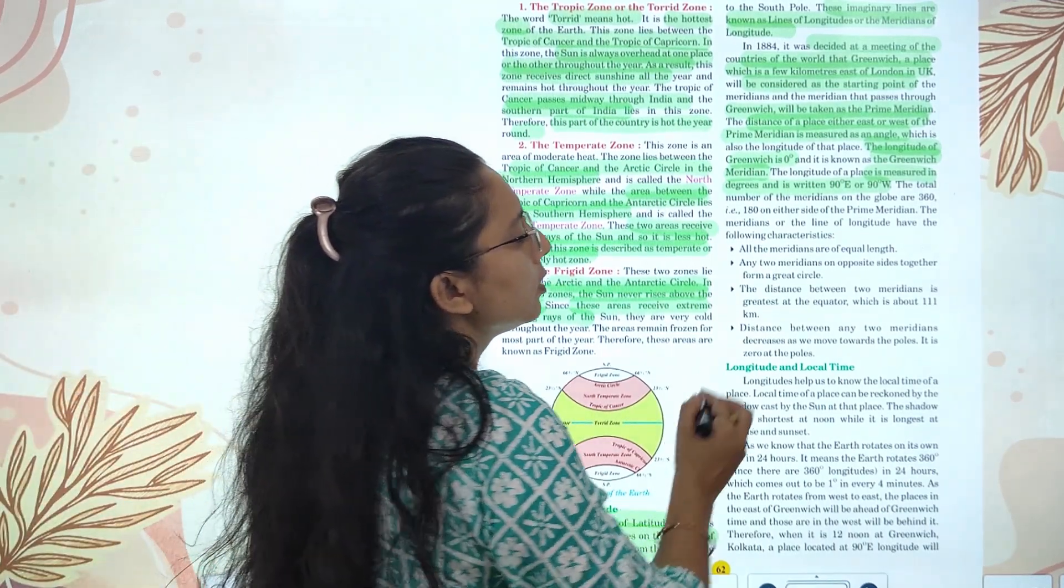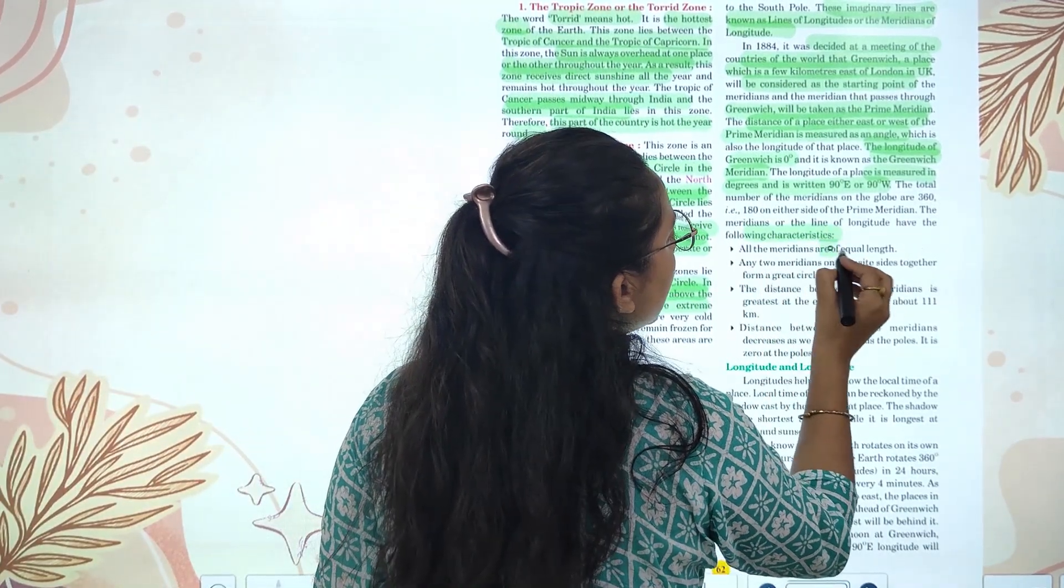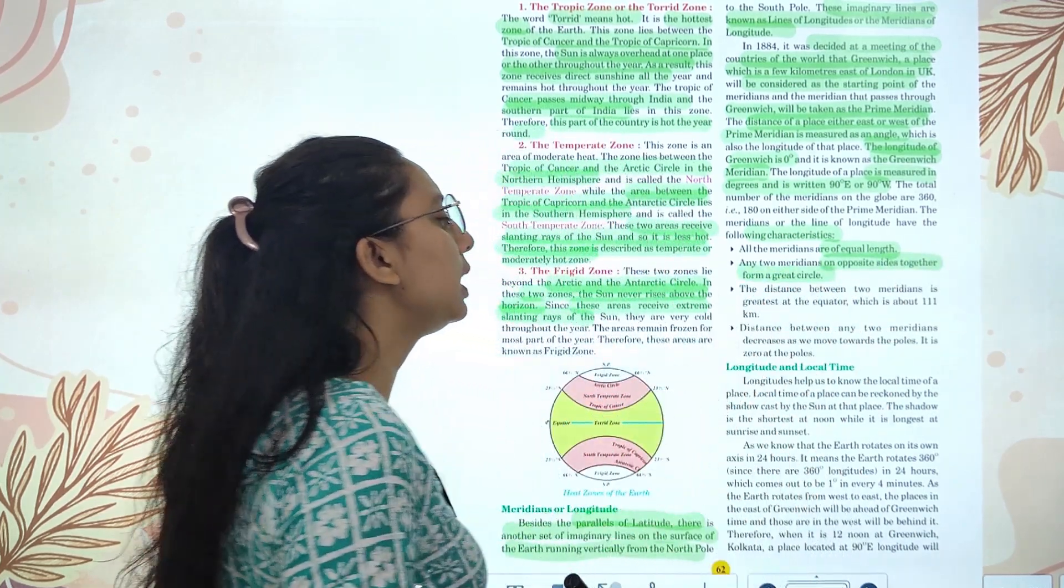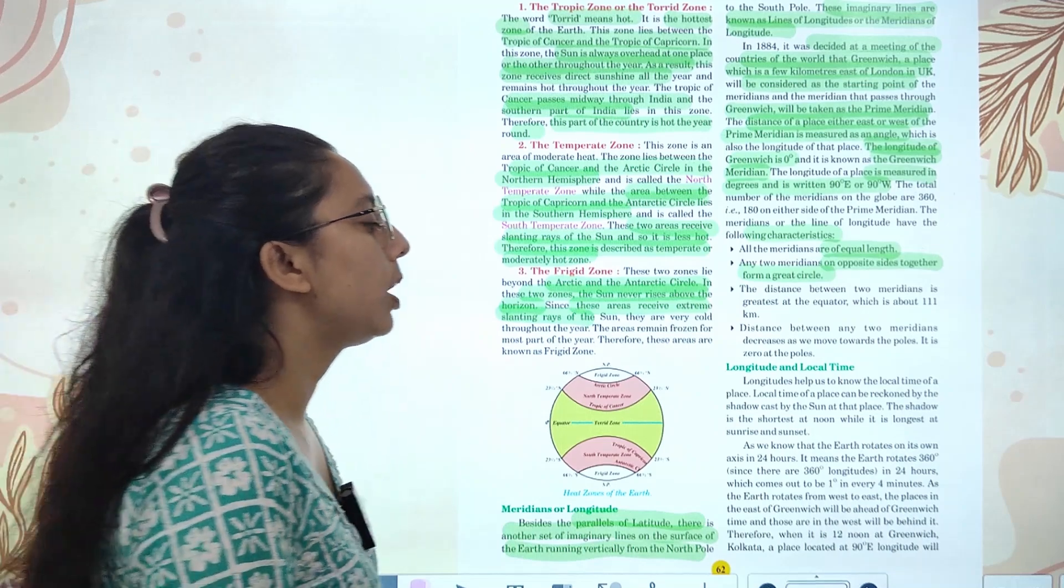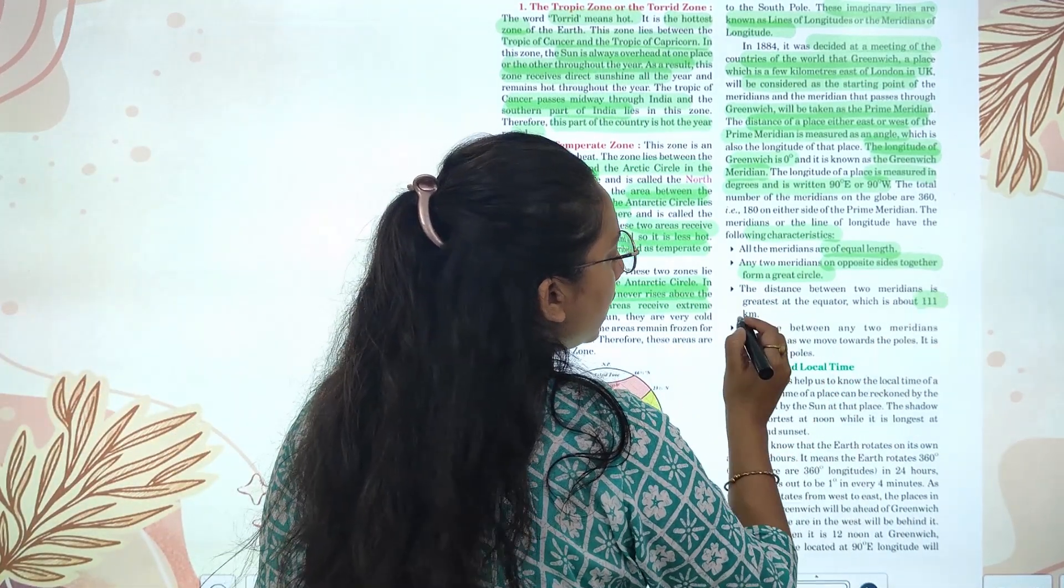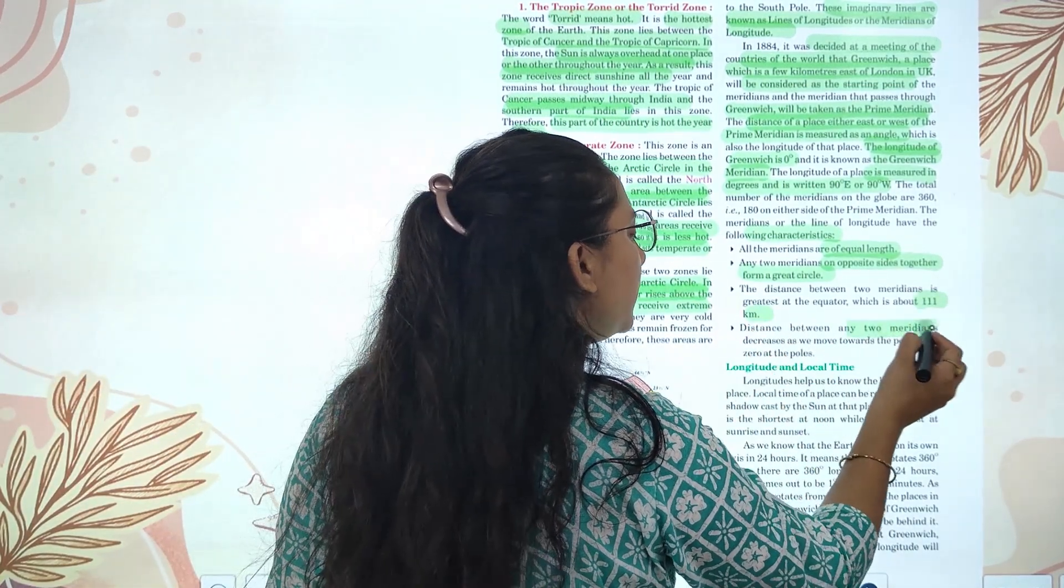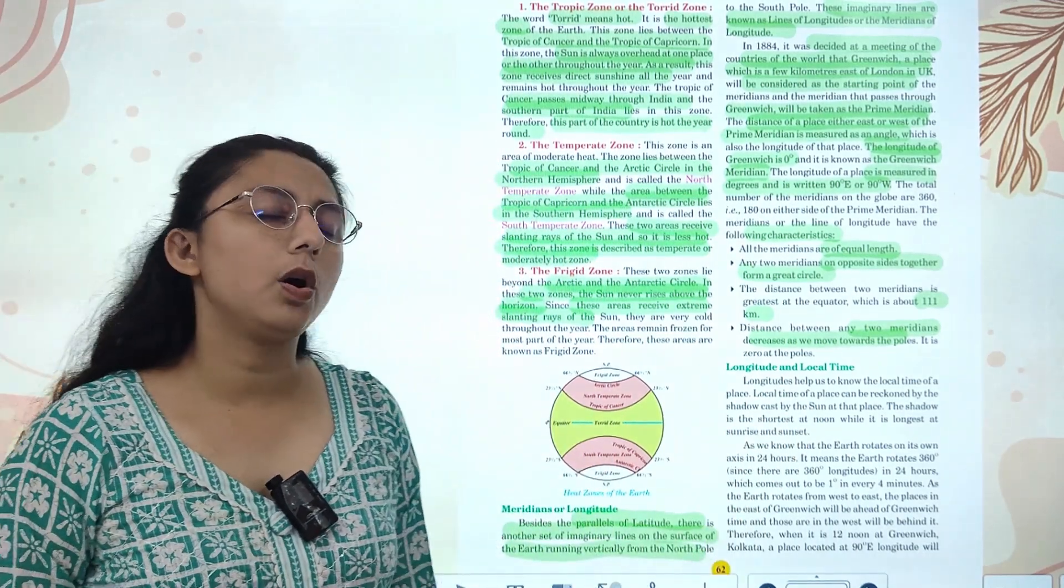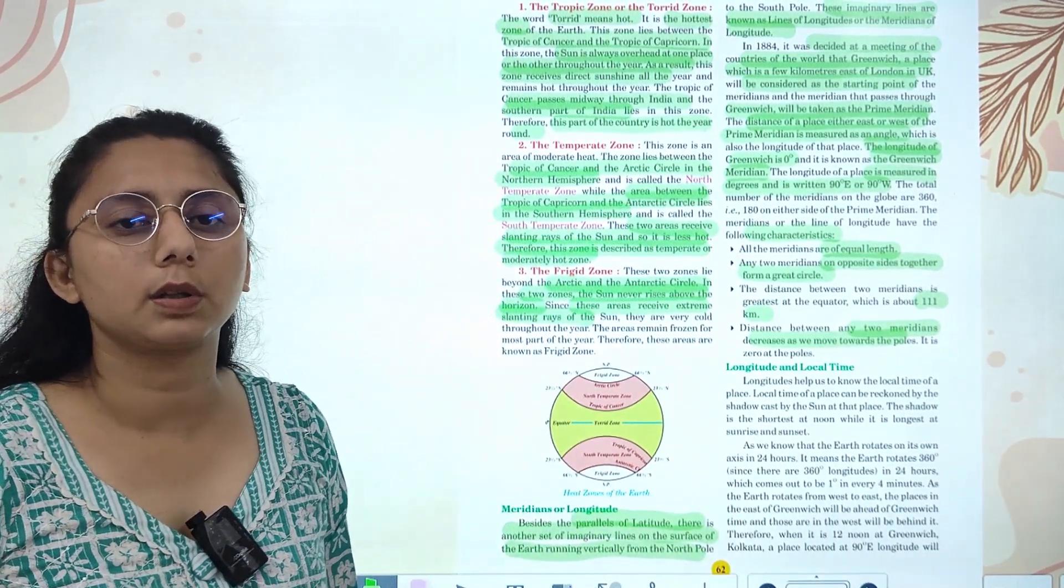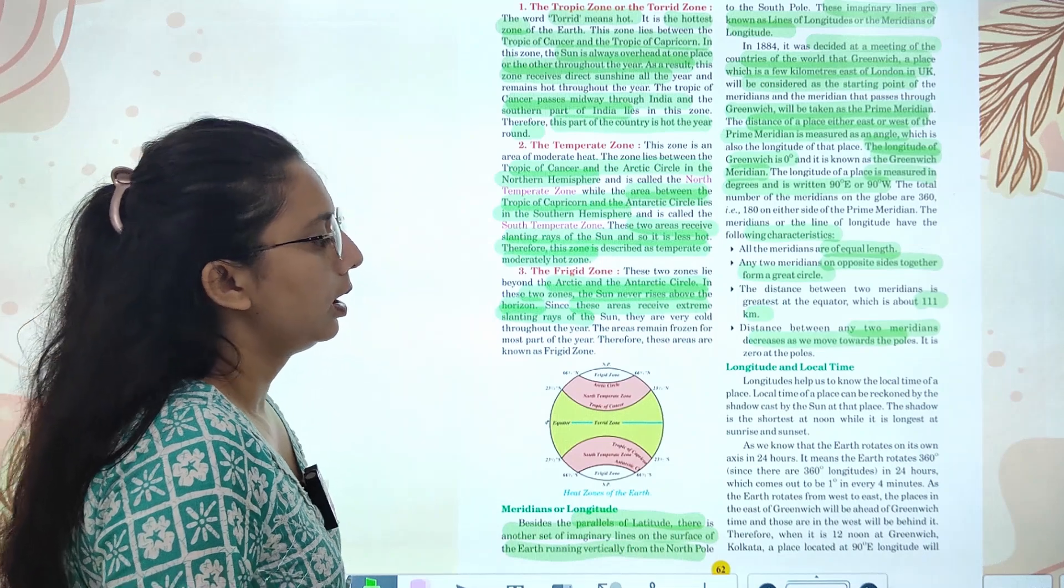The distance of a place east or west of prime meridian is measured in degrees, from zero degrees to 180 degrees east or west. Now we have some characteristics. All meridians are of equal length. Meridians on opposite sides together form a great circle. The greatest is at the equator. Distance between two meridians is 111 kilometers at the equator. The distance between two meridians decreases when you move towards the poles, and at the poles it becomes zero.